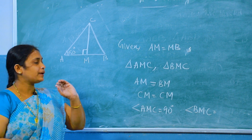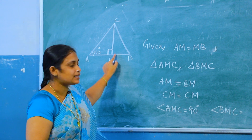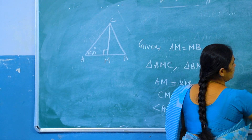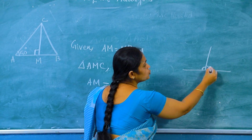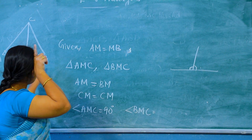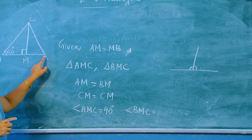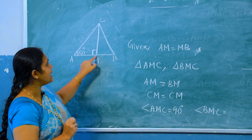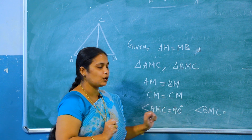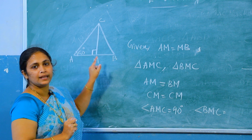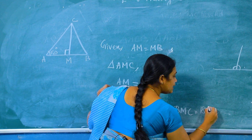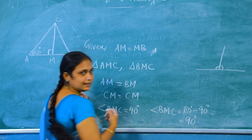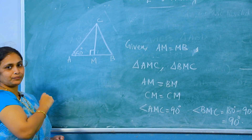What do you mean by linear pair? A linear pair means the sum of these angles equals 180 degrees. Therefore, angle AMC plus angle BMC equal to 180 degrees. Since AMC equal to 90 degrees, angle BMC equal to 180 minus 90 equal to 90 degrees.